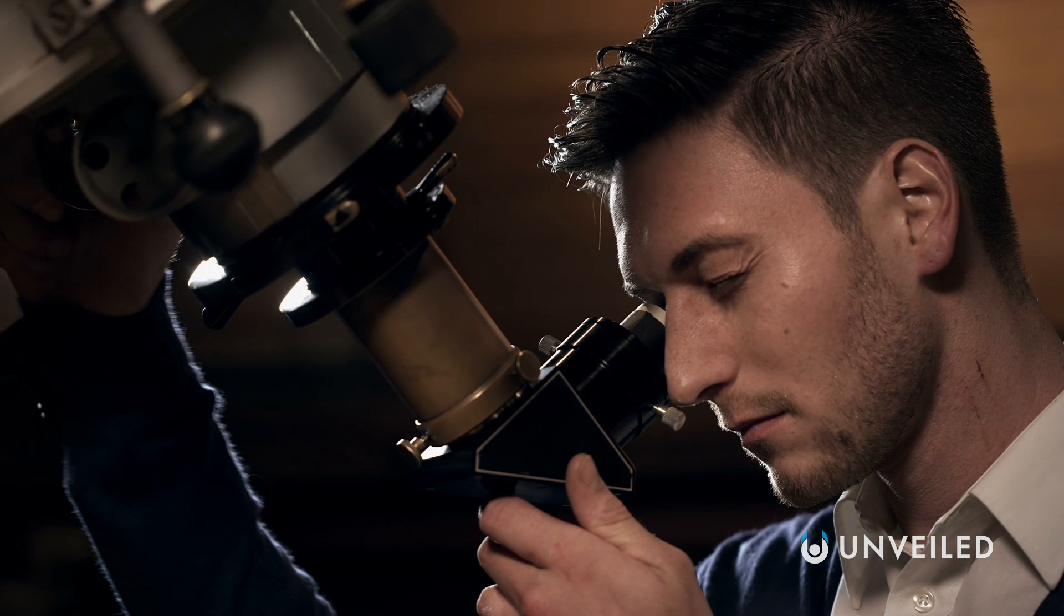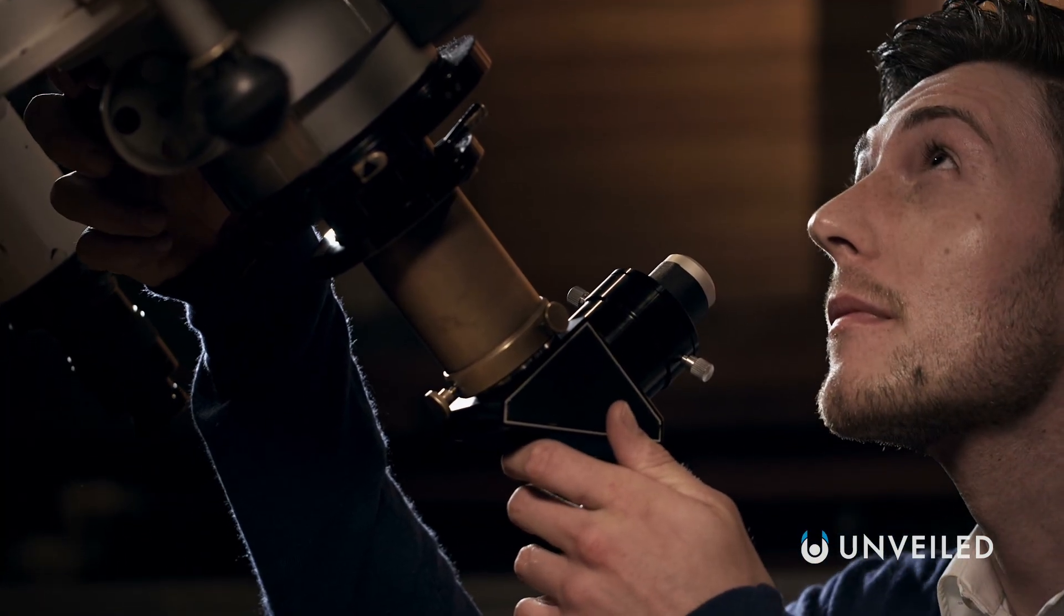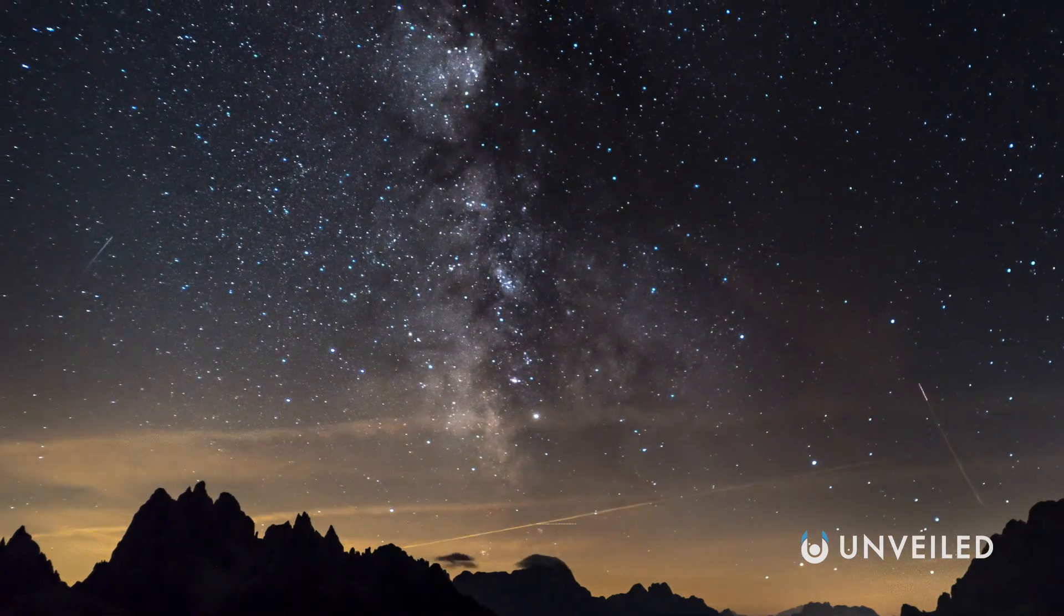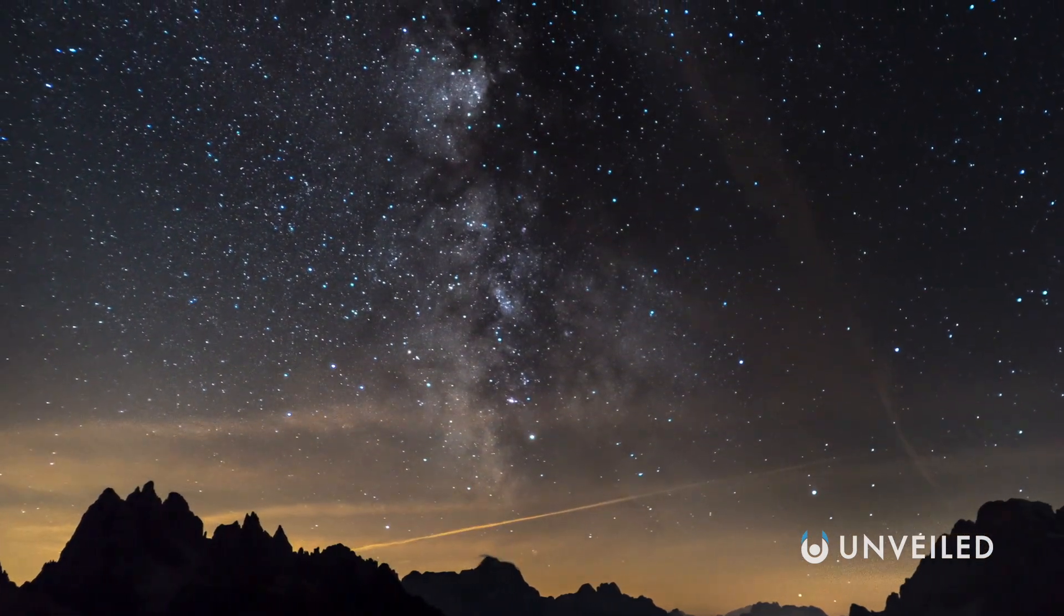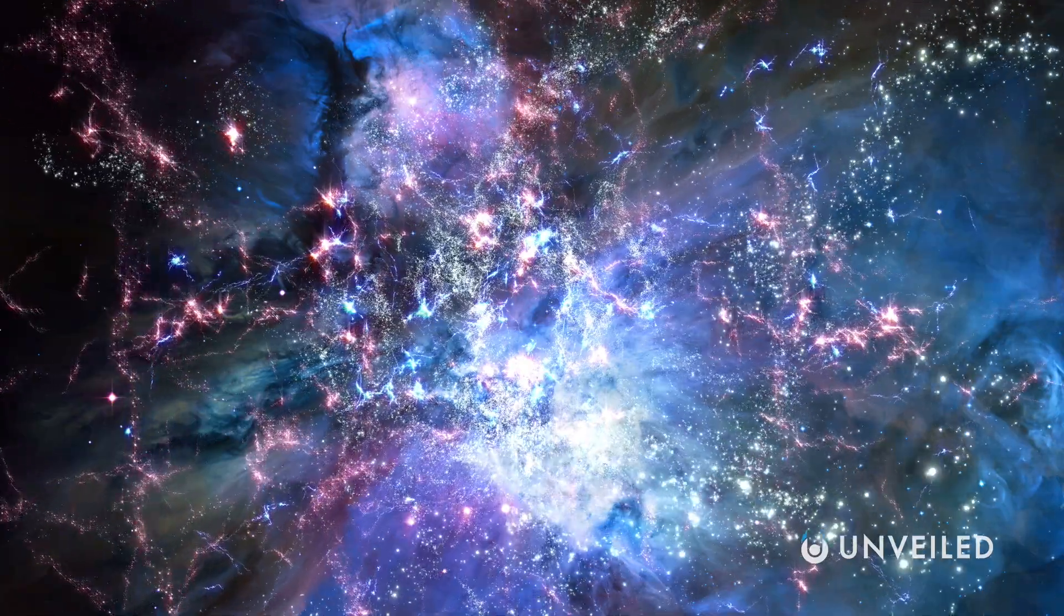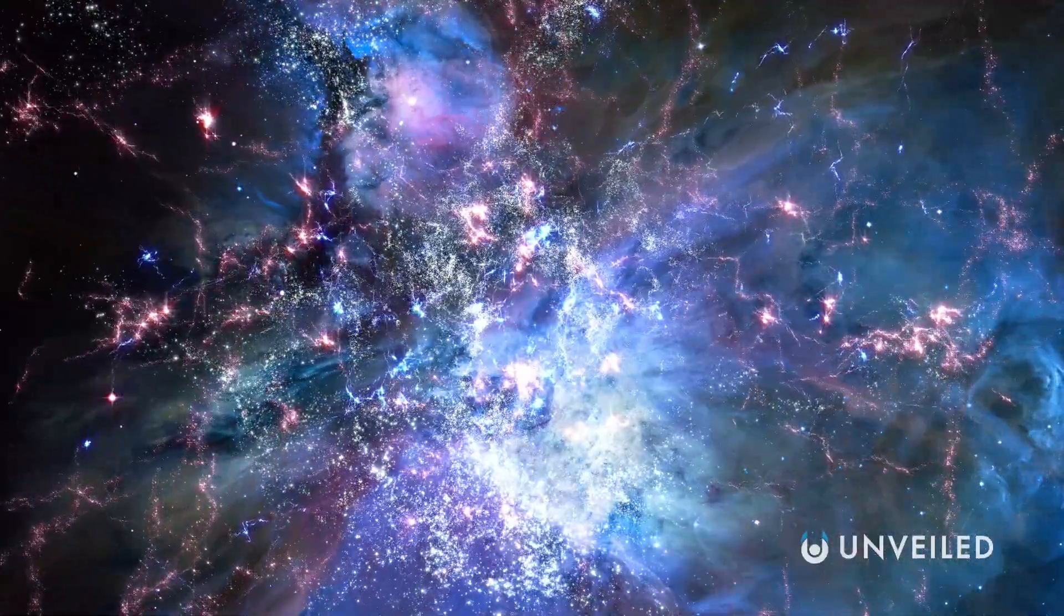Before we discovered that universal expansion was accelerating, scientists thought that there was only one way for the universe to stop spreading outwards. It would have to contain enough mass for gravity to eventually overcome the rate of expansion, to force matter to fold back in on itself. Scientists called this amount of matter the critical density. It was the point at which everything would change. However, that all changed when we discovered the accelerating rate, which led to theories on dark energy, the force usually cited as driving the expansion of the universe.